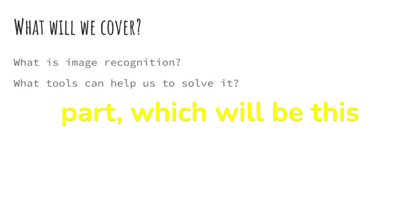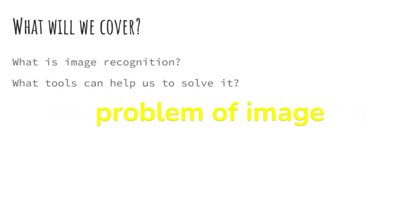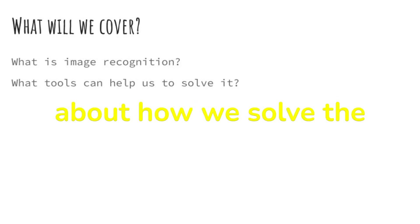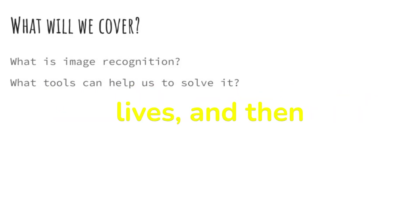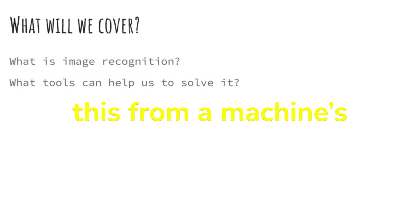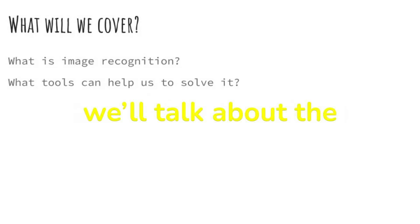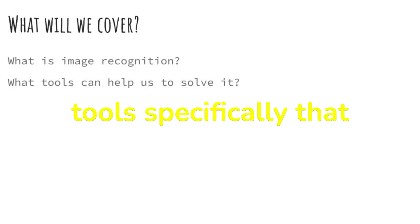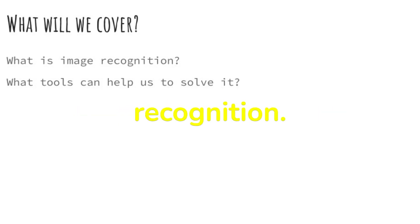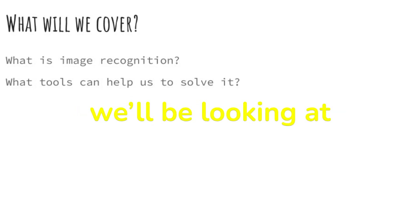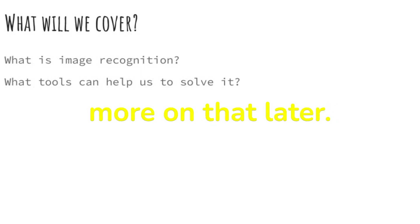The first part, which will be this video, will be all about introducing the problem of image recognition, talking about how we solve the problem of image recognition in our day-to-day lives, and then we'll go on to explore this from a machine's point of view. After that, we'll talk about the tools specifically that machines use to help with image recognition — specifically, we'll be looking at convolutional neural networks, but a bit more on that later.